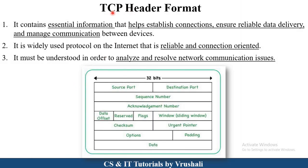The first point is: what exactly is TCP header format? As we discussed earlier in the OSI model, there is a transport layer, and under the transport layer TCP and UDP both protocols are used. TCP is a connection-oriented protocol. TCP protocol is used to establish the connection between sender and receiver. TCP protocol also ensures that proper or accurate information is received by the receiver. So basically it manages the complete communication flow between sender and receiver.